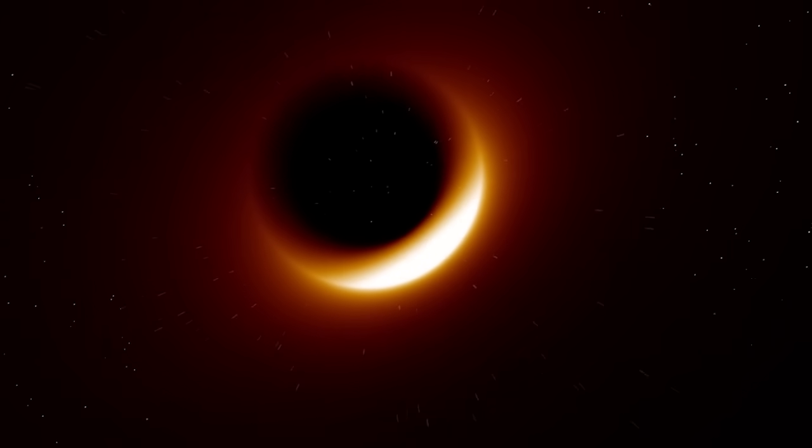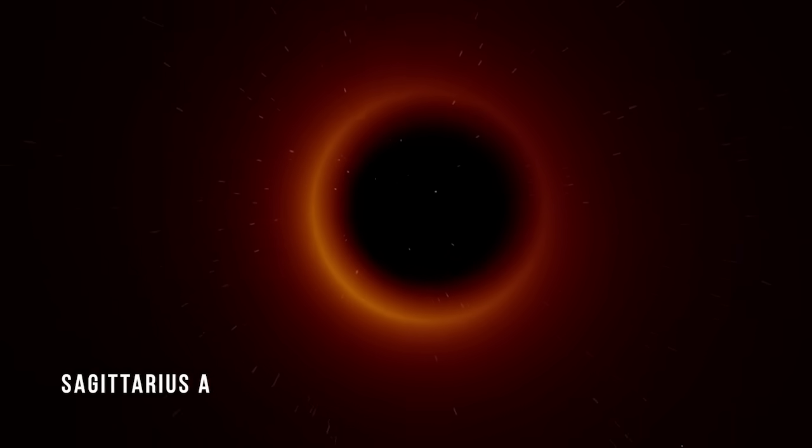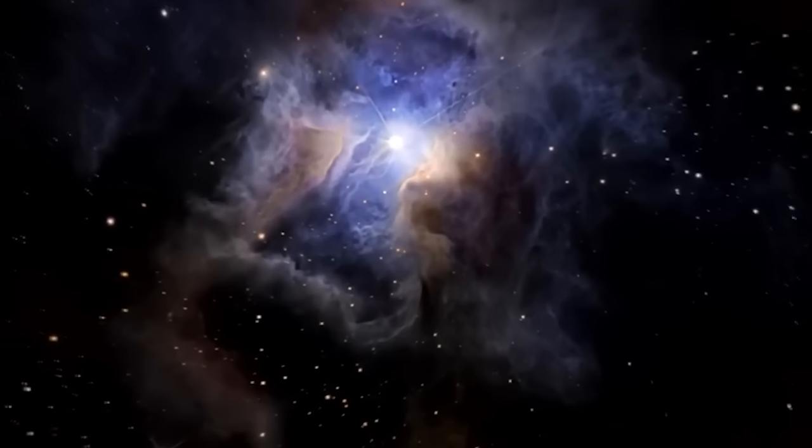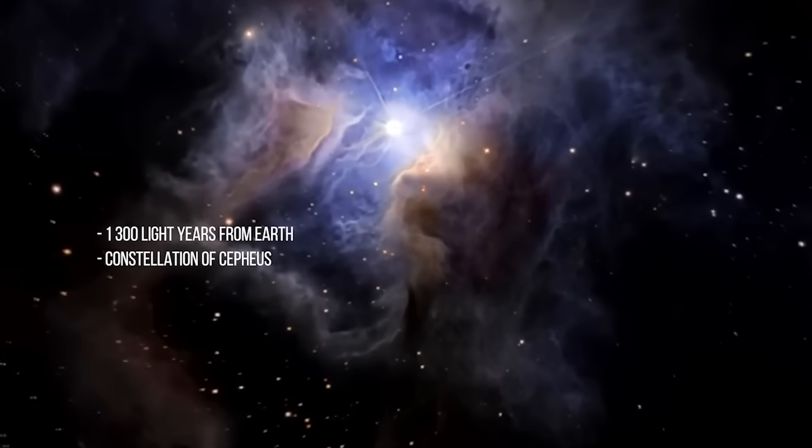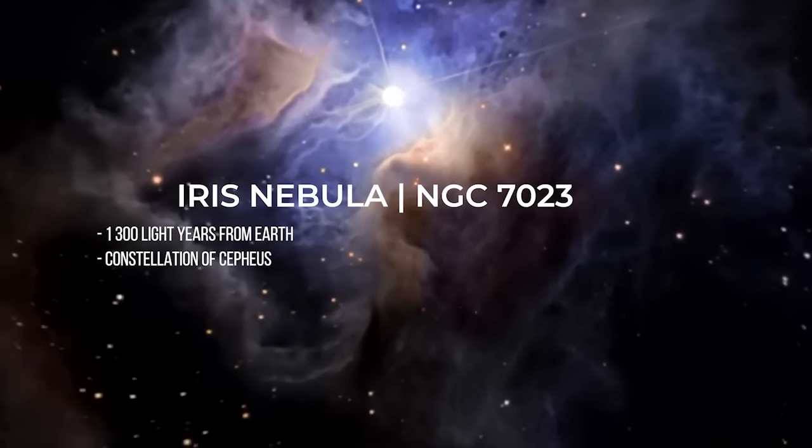In 2023, the James Webb Telescope will also study the black hole at the center of the Milky Way, Sagittarius A, as well as the Iris Nebula. The Iris Nebula, or NGC 7023, is located 1300 light-years from Earth, in the constellation of Cepheus.